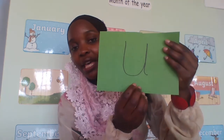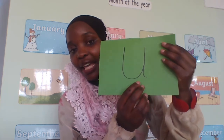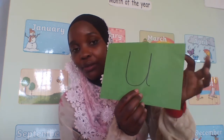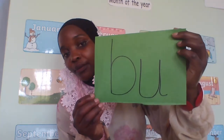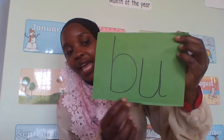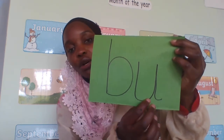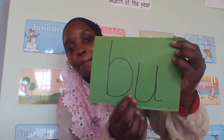Uu. Everyone say 'Uu'. Again, 'Uu'. This one is 'Buu'. Again, 'Buu'. Buu and Uu — the sound is 'Buu'.